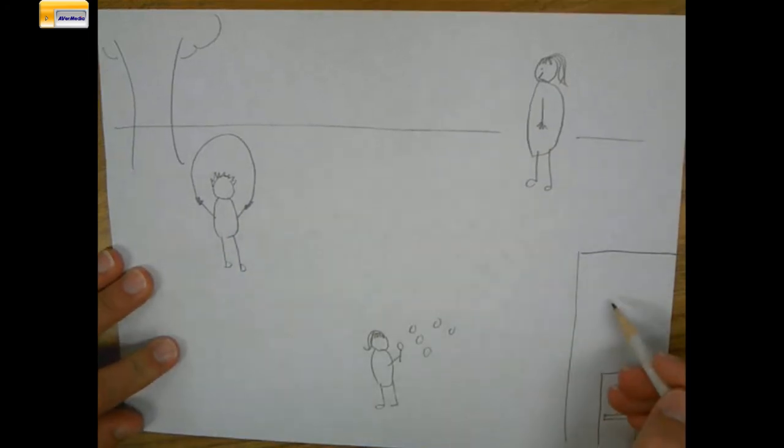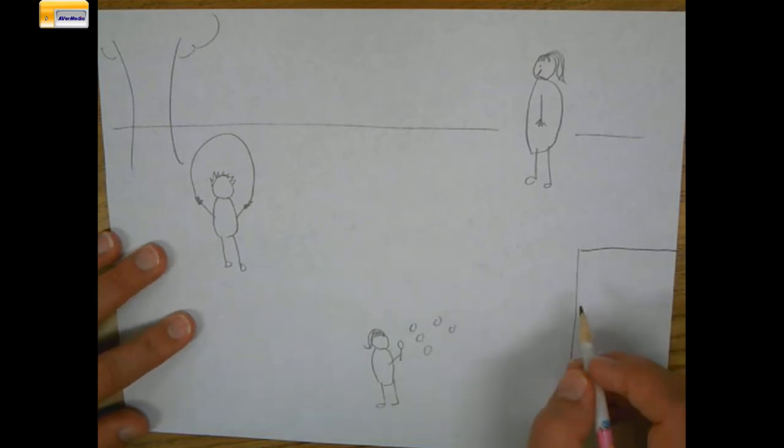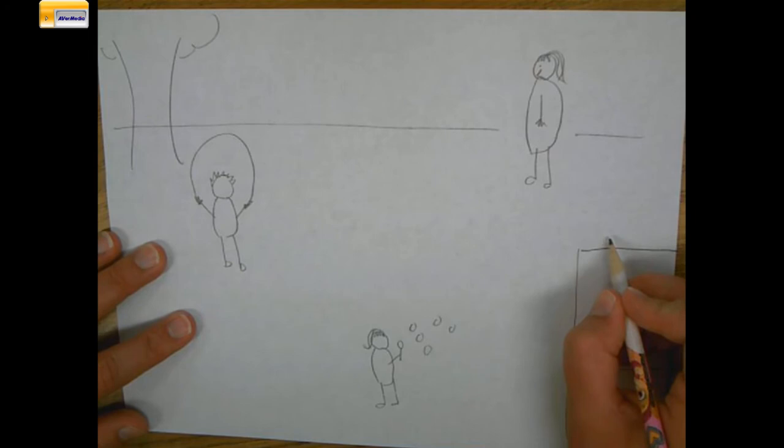This is the school. I want to write the word school. You might not know all the letters in the word school, so I'm going to say it very slowly to stretch it out and write the sounds I hear. School. The first sound I heard was the s sound. I know that's the letter S. Sk.